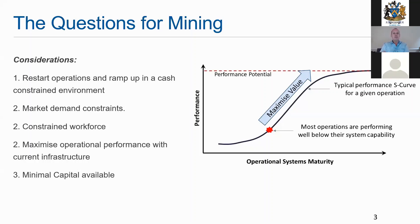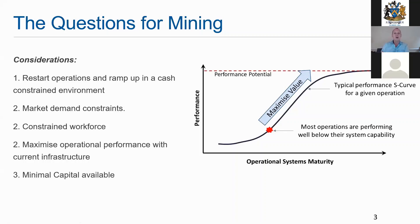How do we maximize operational performance with our current infrastructure? It's really about what we've got in place right now and how we maximize that performance — and how do we do that with minimal capital available? Looking at the charts, we're probably sitting at the bottom of a performance curve, operating far below our capability.